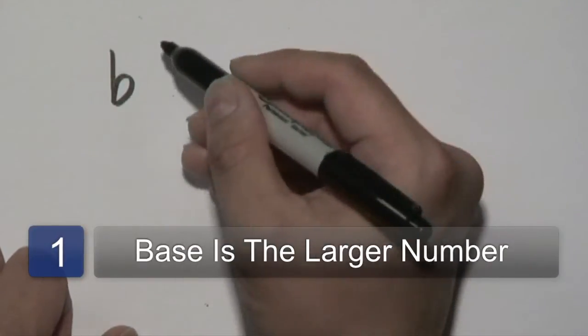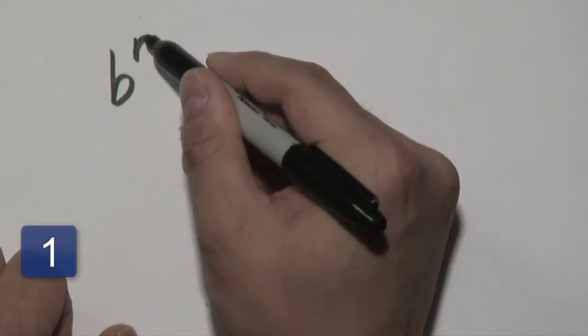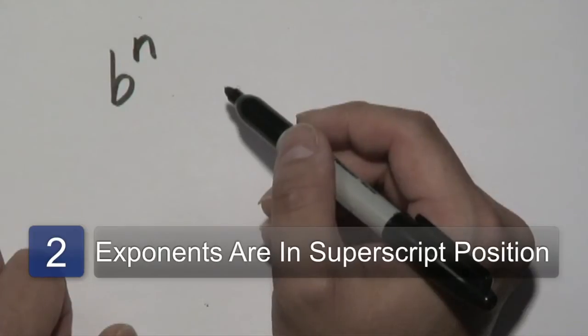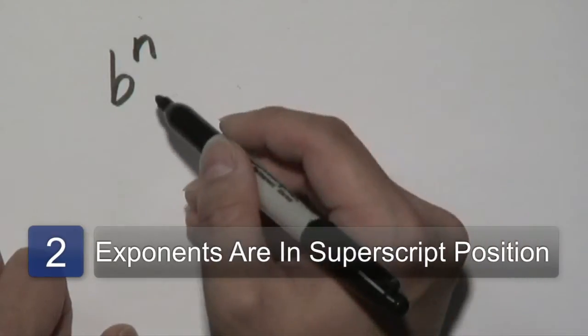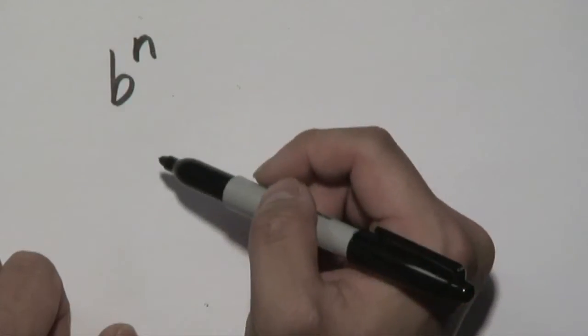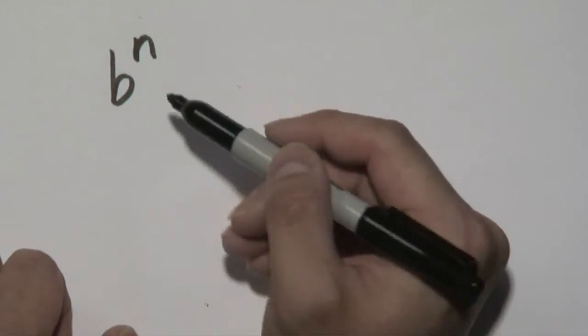I'll just denote it B. The exponent is always going to be at the corner here. Some folks call it a superscript, as opposed to a subscript where you write it below the B, but you always write it above the B like so, and that's where the exponent would reside.